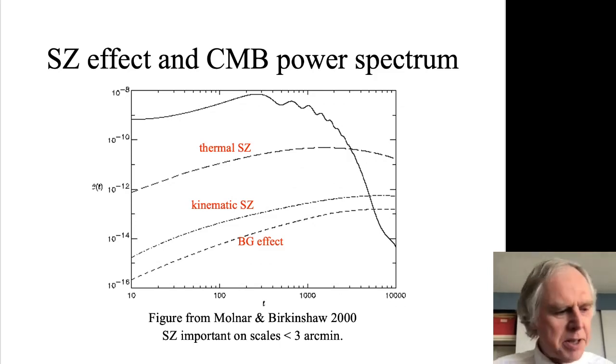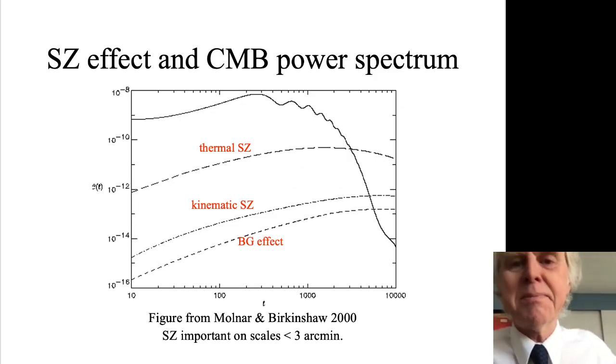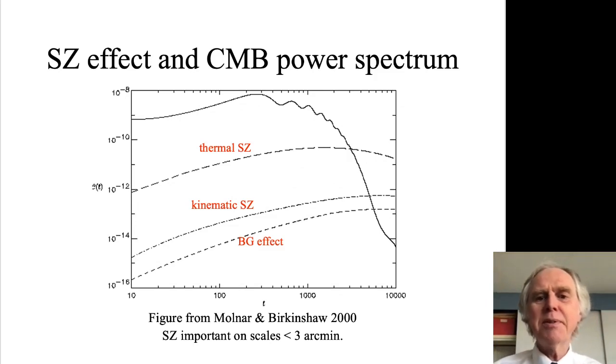That means that the COBE experiment and the WMAP experiment were very insensitive to SZ effects. But Planck, which could see out to an L of 3 or 4,000 quite easily, is sensitive to the SZ effect and would be expected to find clusters of galaxies from its very good spectral coverage by analyzing the data appropriately. Essentially, the SZ effect dominates the lumpiness of the microwave background radiation once you start to look on scales less than a few arc minutes.